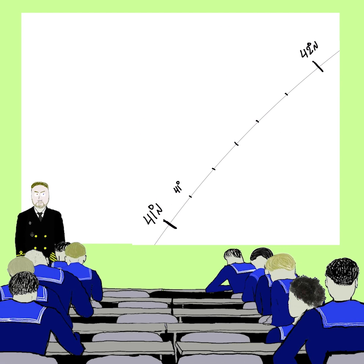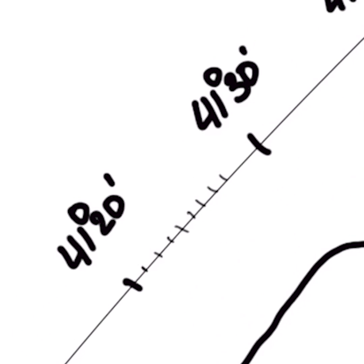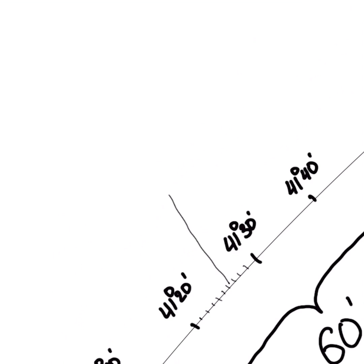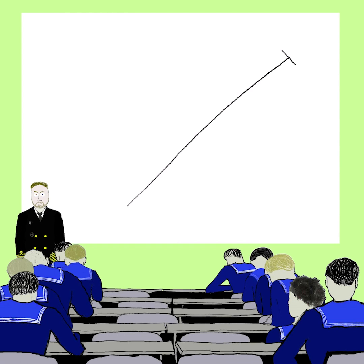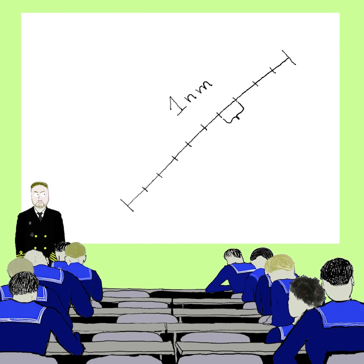1852 meters is the length of one minute of geographical latitude arc. In order to measure short marine distances, we use a decimal of the nautical mile called a cable, and there are 10 cables in each nautical mile.